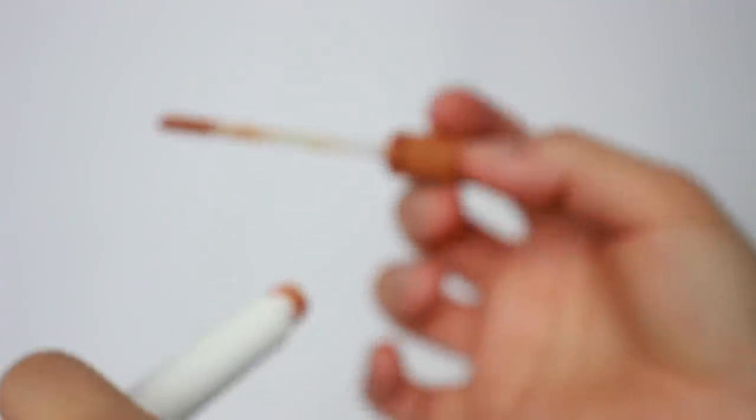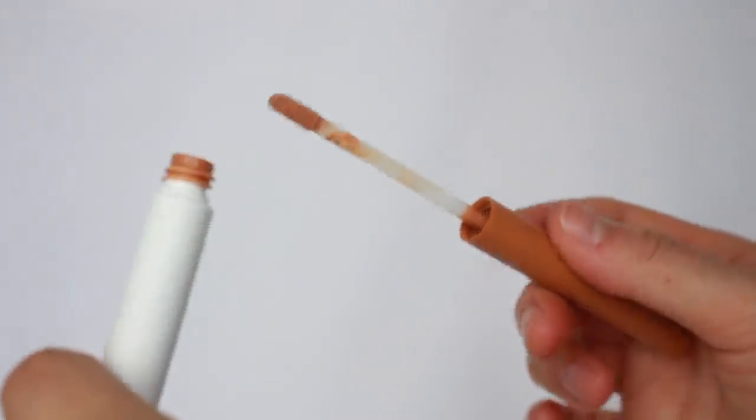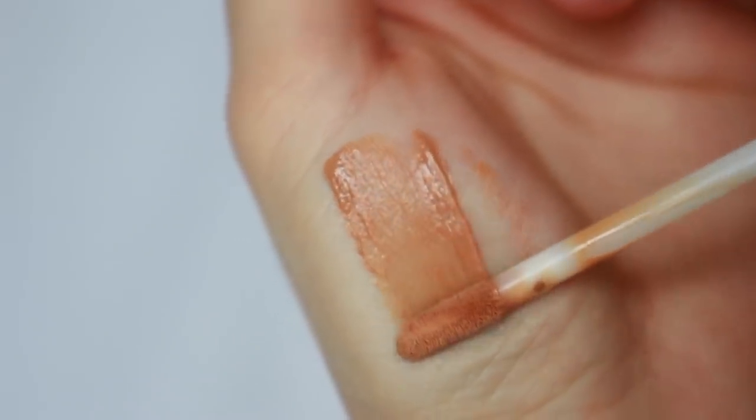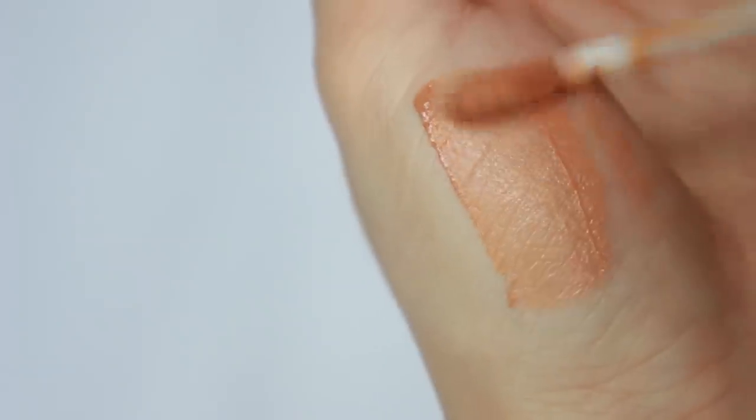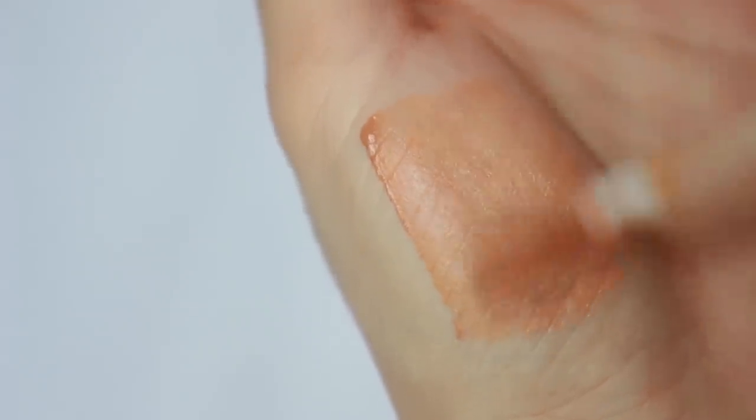It comes with thoughtful applicators so it's very easy to use. Consistency is liquidy and creamy at first and once you blend it on your skin, it turns to powdery or velvety finish. It's very lightweight and very sheer but some shades are more pigmented than others so it's better to test and see what best suits you.